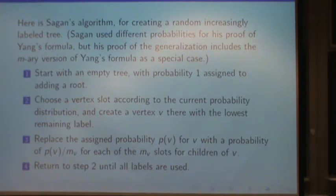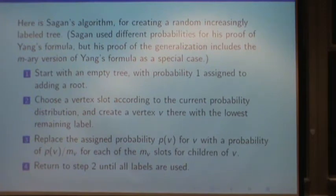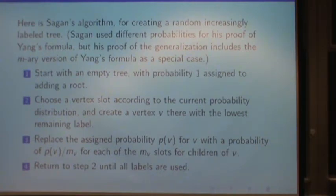Start with an empty tree, and assign probability 1 to adding a root. Choose a vertex slot according to the current probability distribution, and put a vertex there with the lowest remaining label. And then replace the assigned probability for that vertex, dividing it equally among all the potential slots for children.